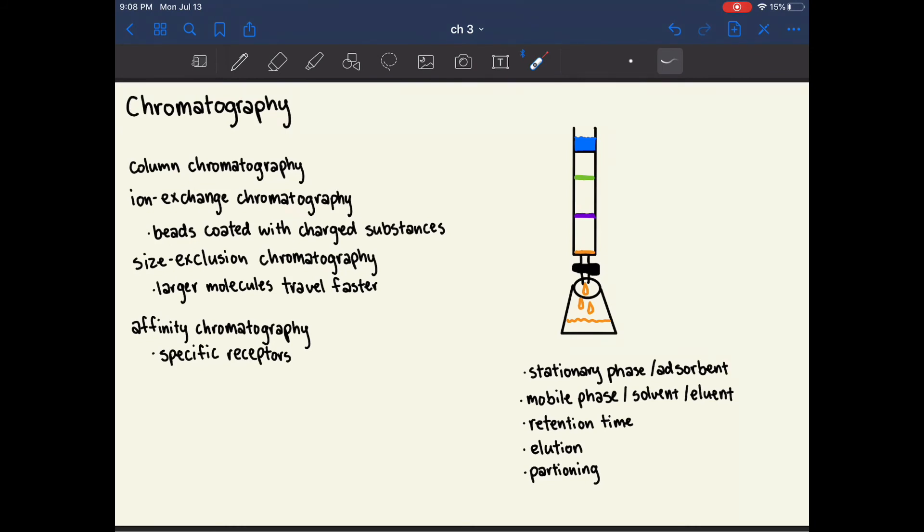Size exclusion chromatography is a type of chromatography in which beads have very small pores in them, and so very small substances will go through the pores, which slows them down. However, larger molecules will go around the beads, which allows them to travel much faster. This can seem kind of counterintuitive, as you would expect larger molecules to travel slower. However, the fact that smaller molecules are able to go through the beads actually slows them down.